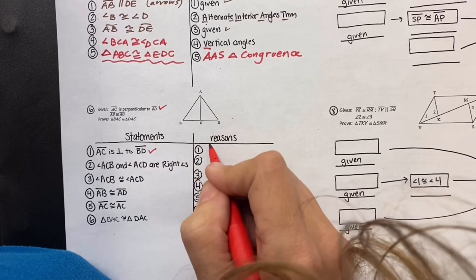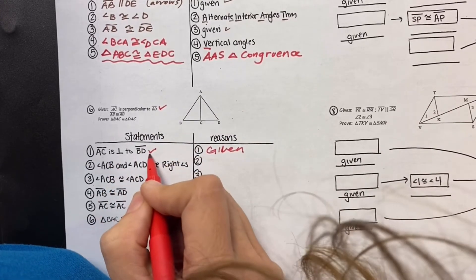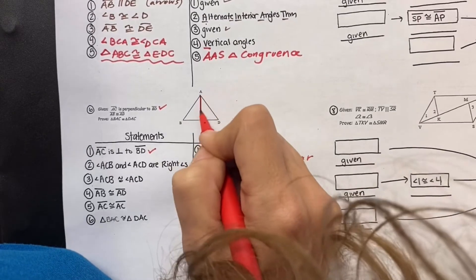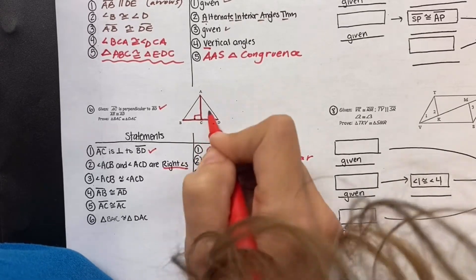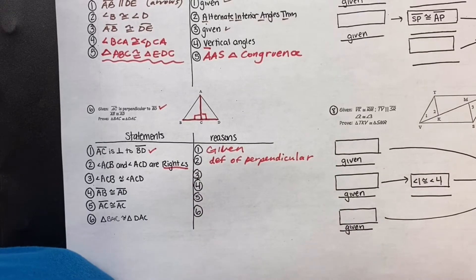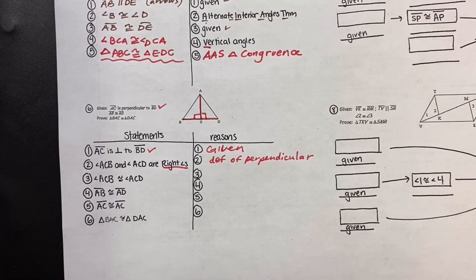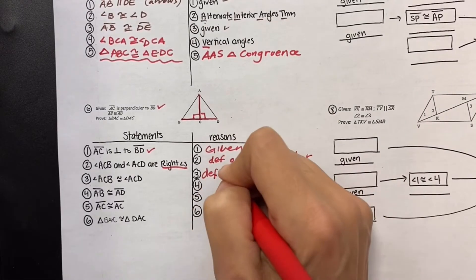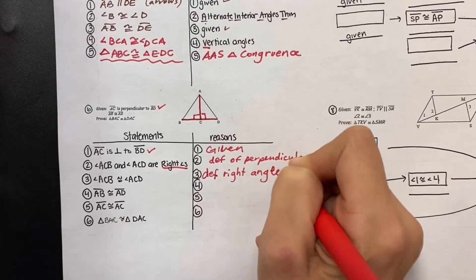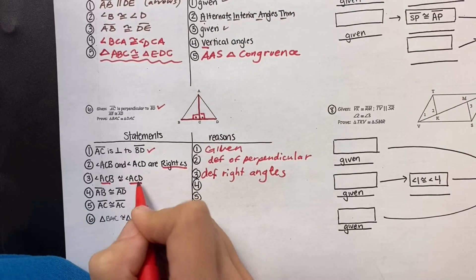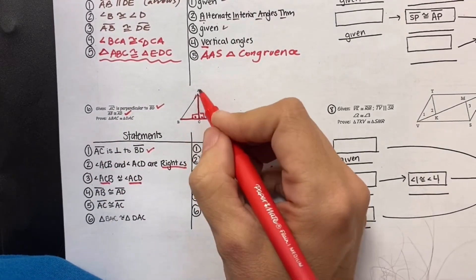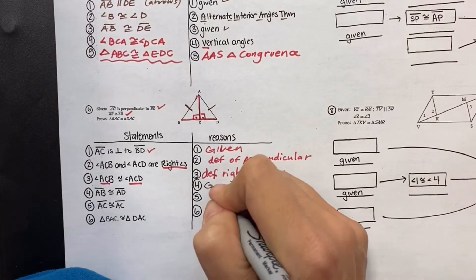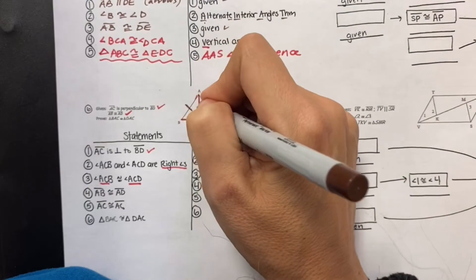AC is perpendicular to BD — given. We have to address that, so we do the definition of perpendicular. If AC is perpendicular to BD, then these are right angles — 90 and 90. The definition of right angles says all right angles are equal, so we know this angle has to equal that angle. That came from my given statement: AB is congruent to AD. And AC is congruent to AC — so that's reflexive.